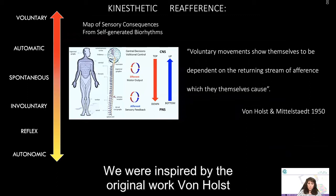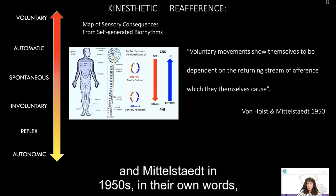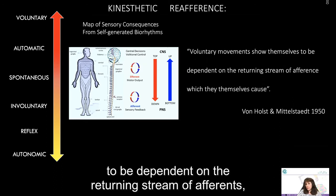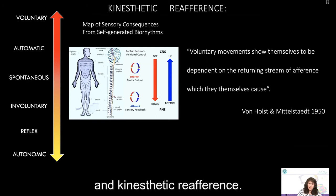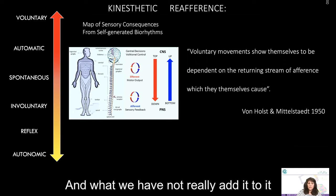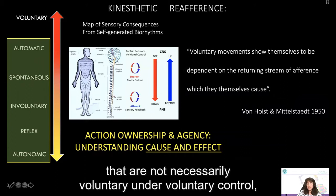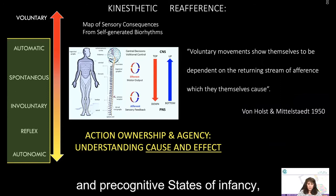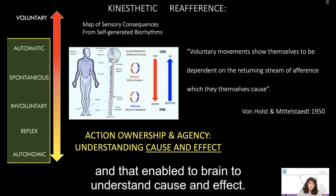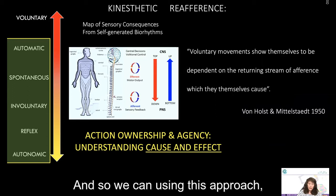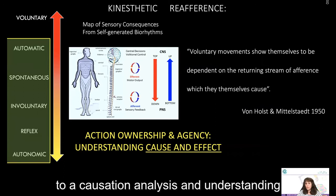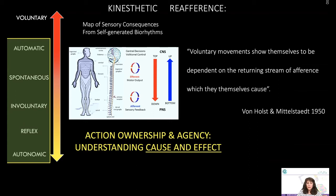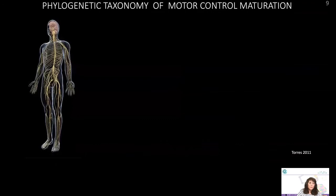We were inspired by the original work of von Holst and Mittelstaedt in the 1950s, who wrote that voluntary movements show themselves to be dependent on the returning stream of afferents which take their own course — known as the principle of reafference, or kinesthetic reafference. What we have non-trivially added is a set of movements that occur largely beneath awareness and are not necessarily under voluntary control, but that we hypothesize contribute to the emergence of action ownership and sense of agency in pre-cognitive states of infancy and enable the brain to understand cause and effect. Using this approach, we can shift from a purely correlation-based analysis to a causation analysis, understanding how the nervous system interacts with the environment and how intelligent behavior self-emerges autonomously.